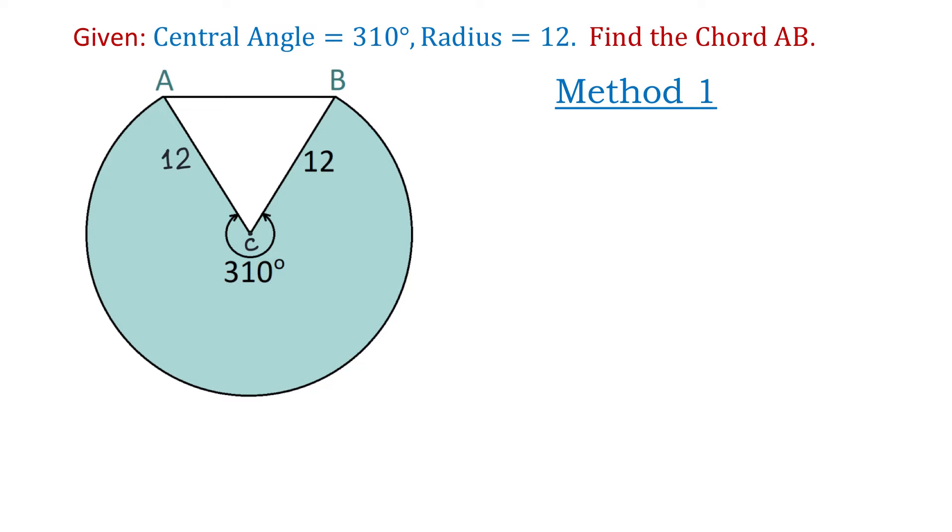In this triangle, angle C can be found by subtracting 310 degrees from 360 degrees. So angle C equals 360 degrees minus 310 degrees, which equals 50 degrees.